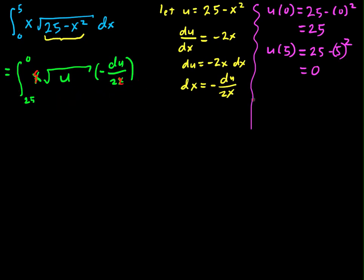I can pull out a factor of negative 1 half. So this becomes negative 1 half multiplied by the integral from 25 to 0 of the square root of u du. And the square root of u is really u to the 1 half power. That's a whole lot easier to deal with because now it's a power function. So that will equal negative 1 half multiplied by u to the 3 halves divided by 3 halves, which is the same as multiplying by 2 thirds, evaluated from 25 to 0.